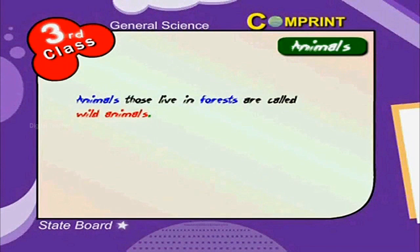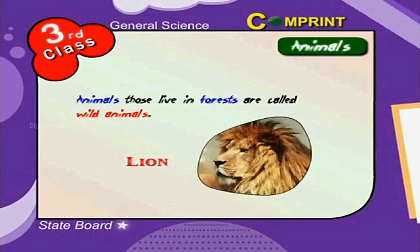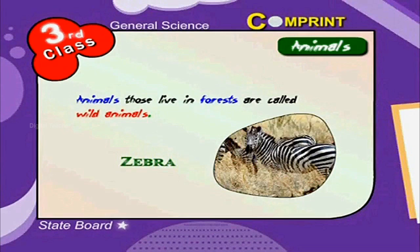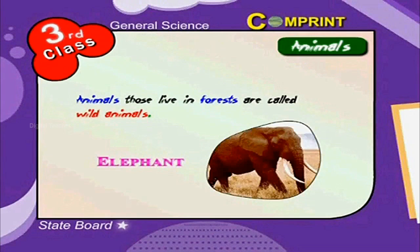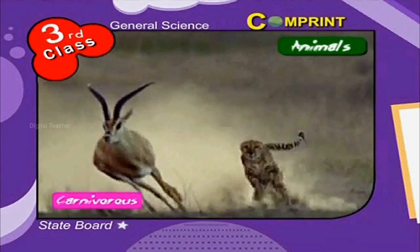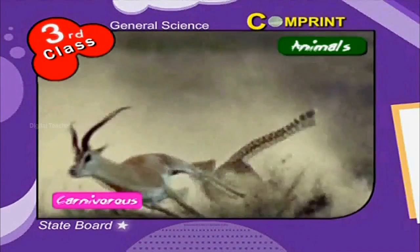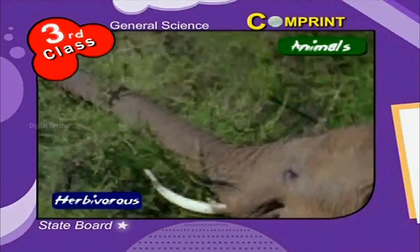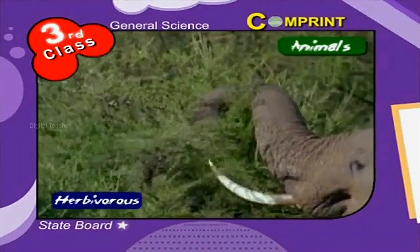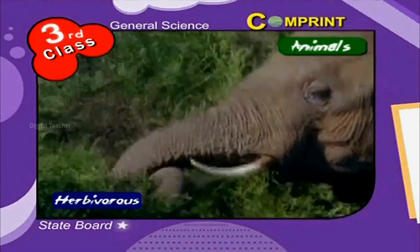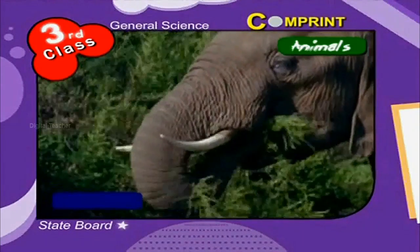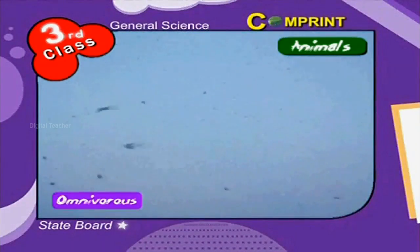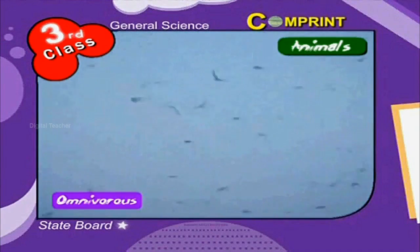Dogs help us in guarding and cats keep the rats away. Animals that live in forests are called wild animals, like lion, tiger, zebra and elephants. Carnivorous animals are those that eat only the flesh of other animals. Herbivorous animals are those that eat only grass, leaves and vegetables.